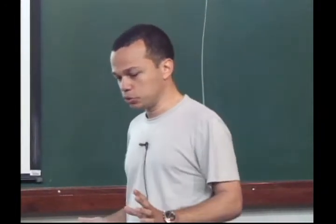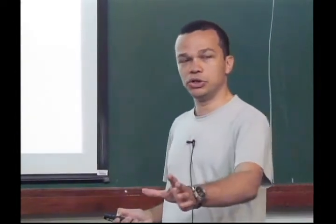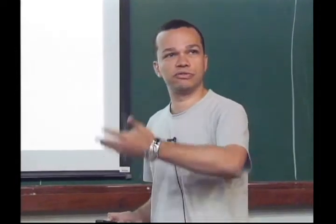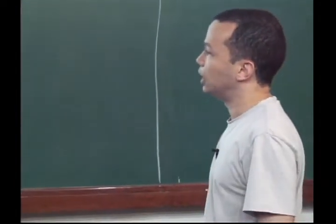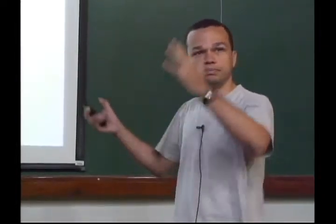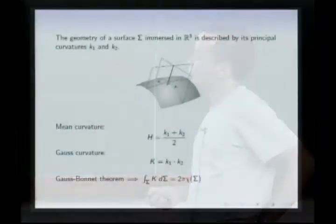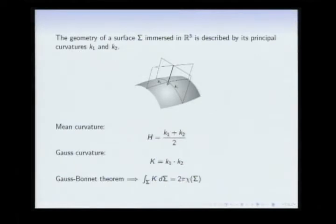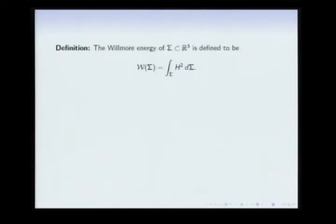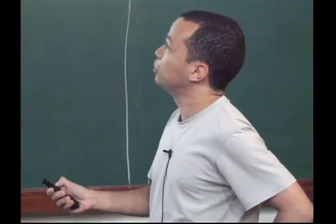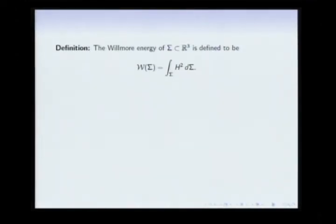We want to associate some natural energy to a given immersion, then look for the minimizers of such energy over all possibilities. We want an energy that is scale invariant; otherwise it does not make sense to minimize. If you want a scale-invariant quantity, it's natural to integrate some expression quadratic in the curvatures. You can take the integral of the square of the mean curvature — this is also scale invariant and it's called the Willmore energy of Σ. That's the energy we are concerned with in this talk: given a closed surface in 3-space, the Willmore energy is the integral of the square of its mean curvature.